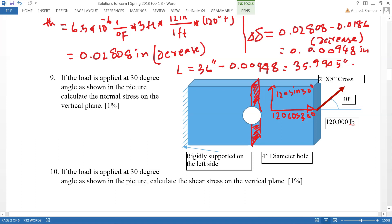The force in the y direction which is 120 sine 30 is half, so that's sixty thousand pounds.